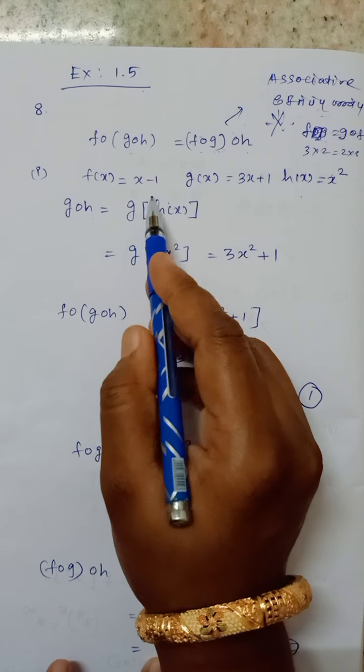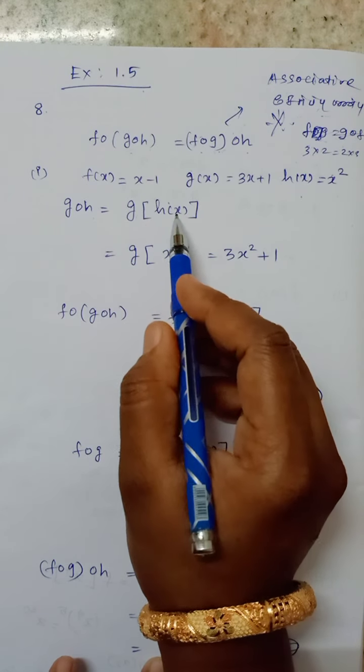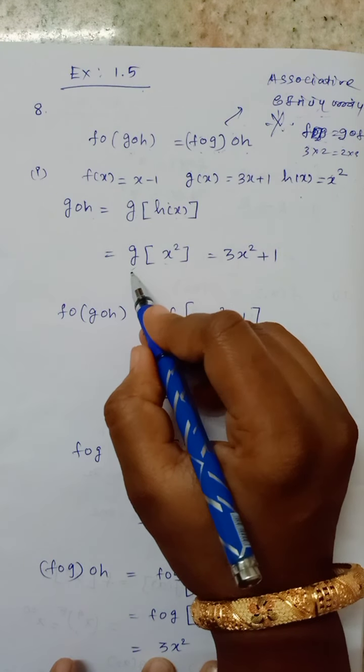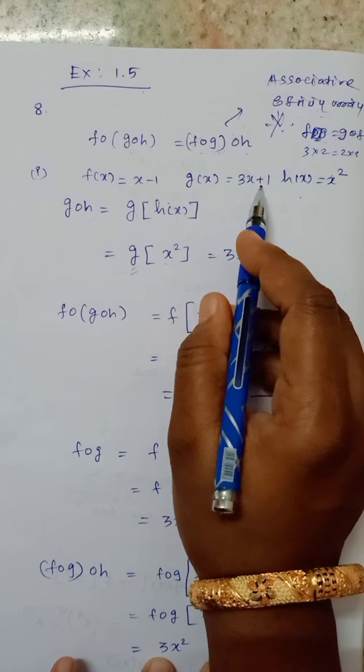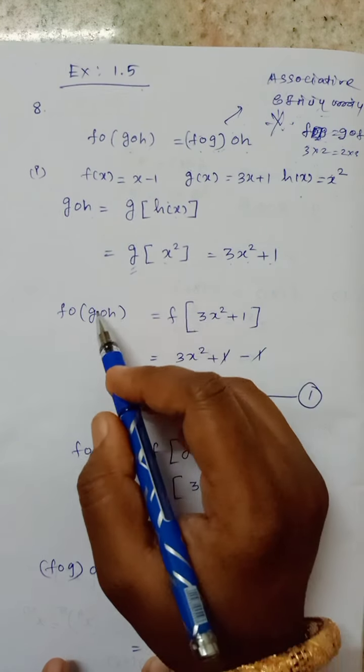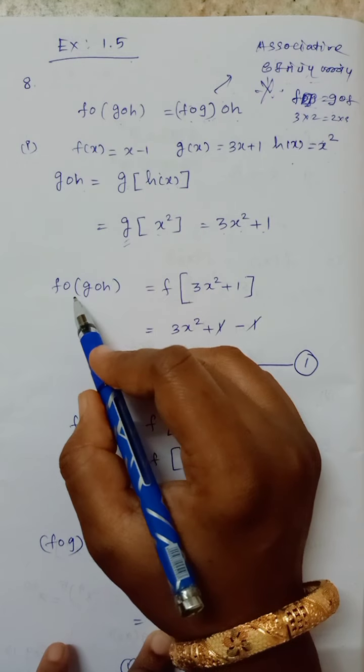So this formula is g of h of x. So h of x is square. So what you do is 3 into x square plus 1.